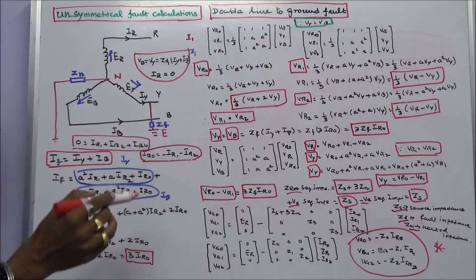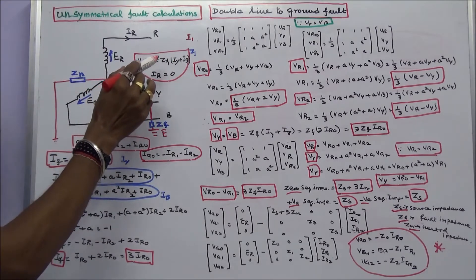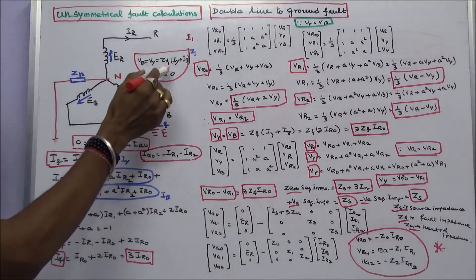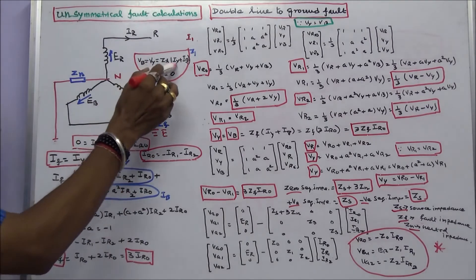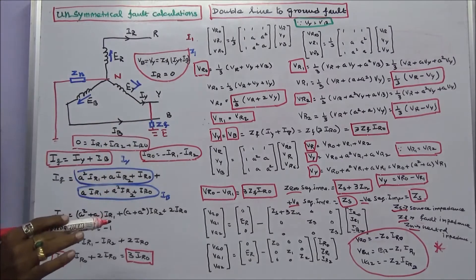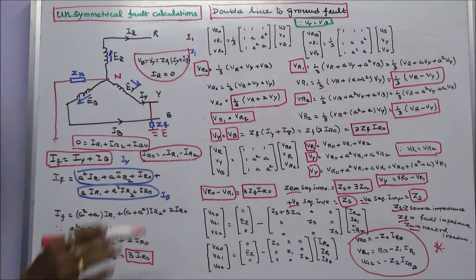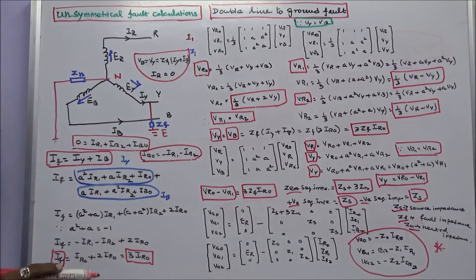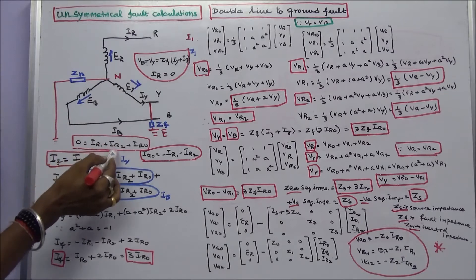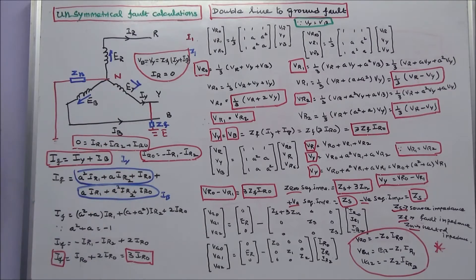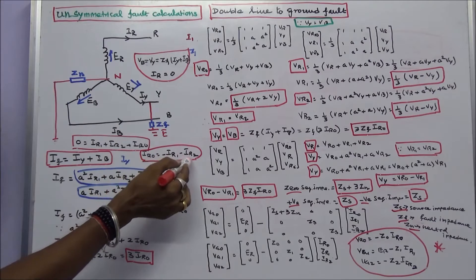The boundary conditions are: VB is equal to VY, which equals fault impedance Zf into (IY plus IB). IY plus IB is the fault current. IR is equal to 0, that is the second condition. Therefore, 0 is equal to IR1 plus IR2 plus IR0, giving IR0 equal to minus IR1 minus IR2.